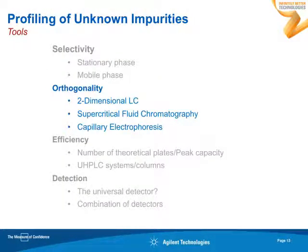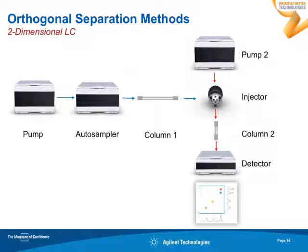Now I would like to switch gears and come to the next level — orthogonal separation means compared to reversed-phase LC. First, I would like to talk about two-dimensional LC. There have already been many presentations on 2D LC at this conference, with many results acquired on our 2D LC system. The principle is very simple: you have your standard LC system with a pump, autosampler, and column, and you replace the detector with a second LC system. The autosampler is replaced by a valve, which has an injection valve to the second dimension column, and finally you have the detector acquiring the data.